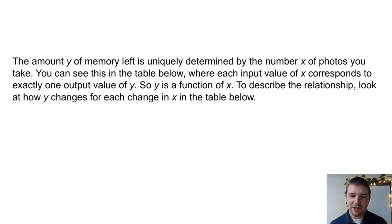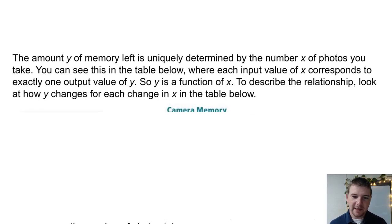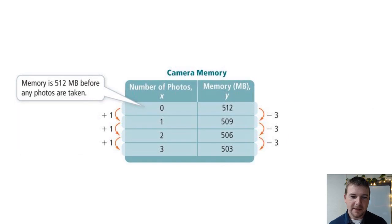To describe the relationship, look at how Y changes for each change in X in the table below. The memory is 512 megabytes to start with, before any photos are taken.